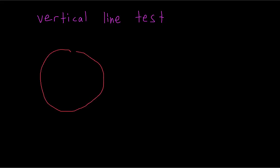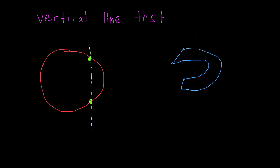In two dimensions, the vertical line is just along the y-axis. For example, a circle fails the vertical line test, so a circle is not a function. In three dimensions, the vertical line test is going to be a line along the z-axis, not the y-axis, because z is the output of the function. If a particular surface fails the vertical line test, that means for a single point (x, y), it has two separate outputs of z, which is not allowed if it's a function.